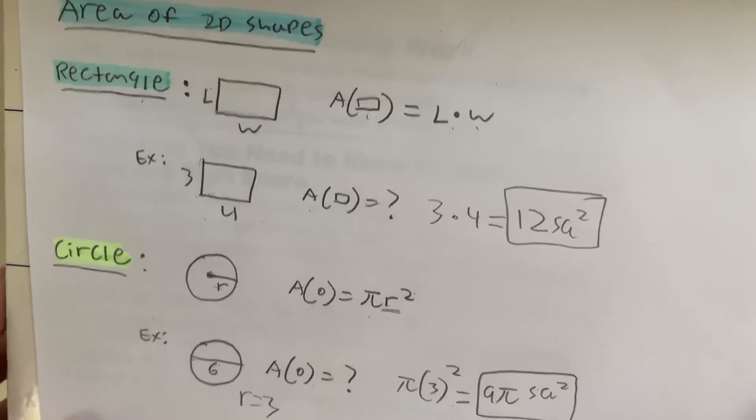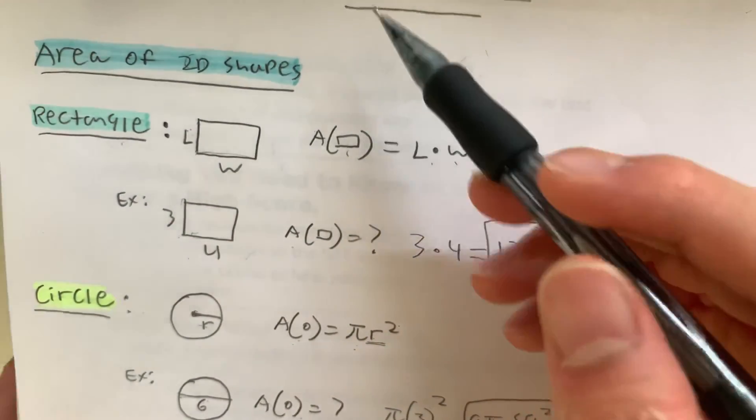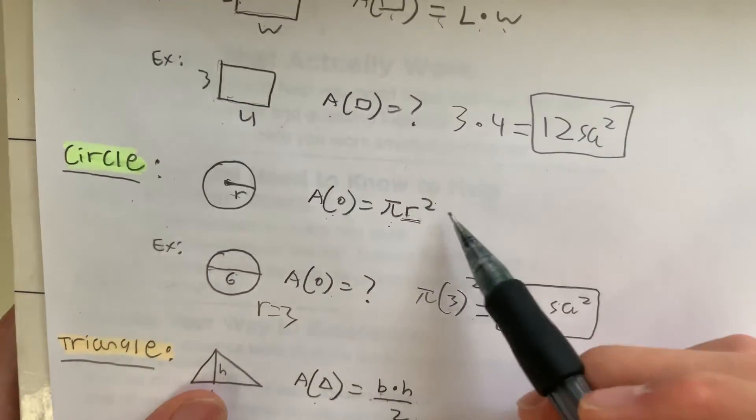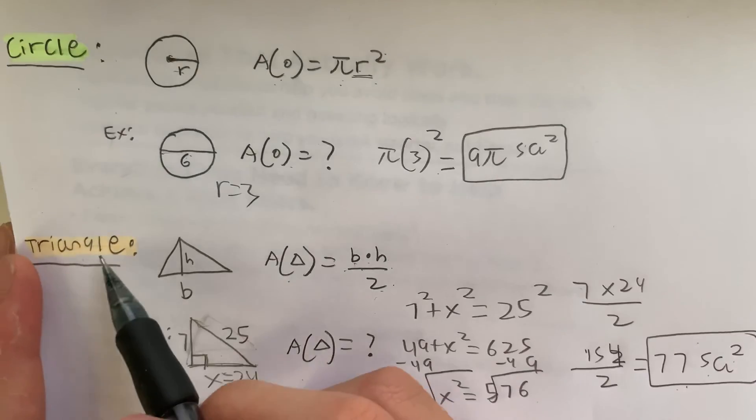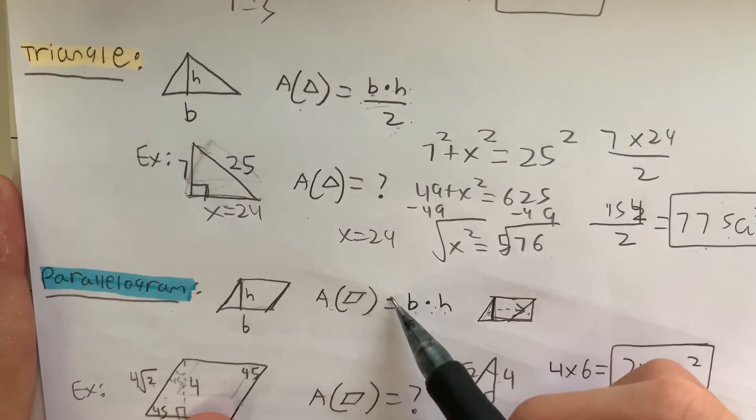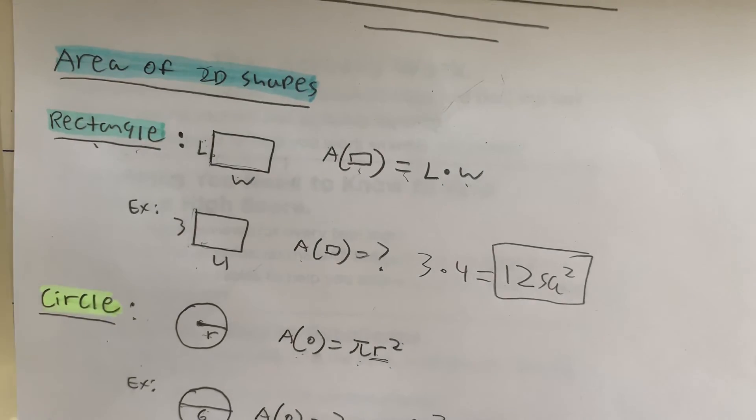Let me give you a quick review of everything. This is the area of two-dimensional shapes. Rectangle is length times width. Circle is pi r squared. Triangle is base times height divided by 2. And lastly, parallelogram is base times height. Thanks for watching guys. Memorize these formulas as you might see them on your test or the SATs.